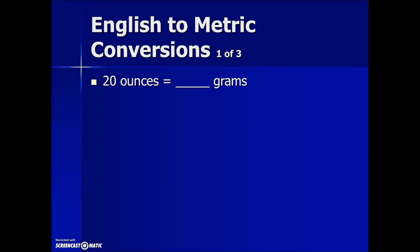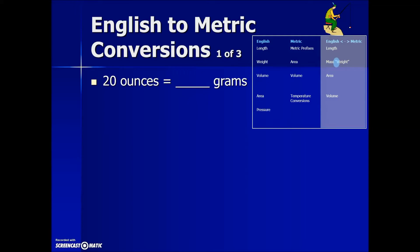This first example asks us to convert 20 ounces into grams. If we refer to the table at the back of our book or a standard conversion table, we're going to go fishing in that third column, which is English and metric conversion or equivalent values. As we look under the category of mass and weight, we find a relationship between ounces and grams.